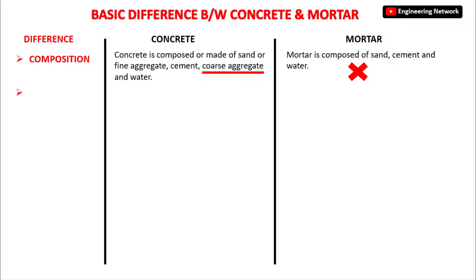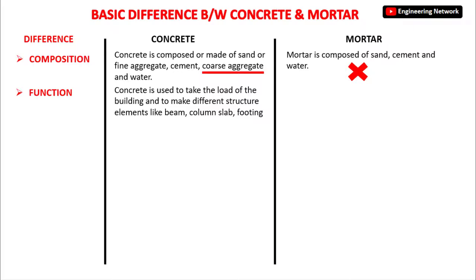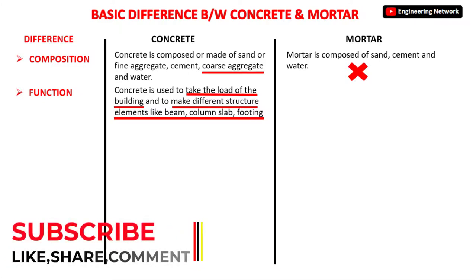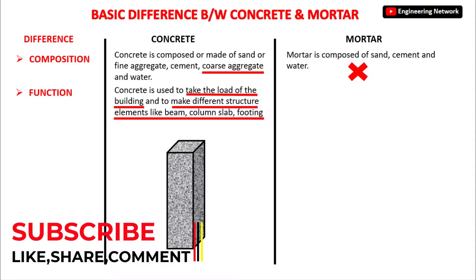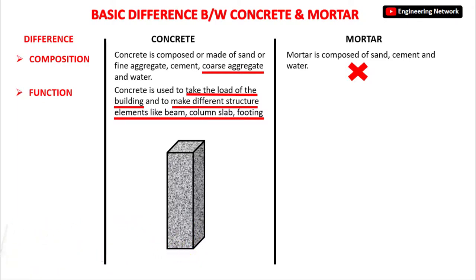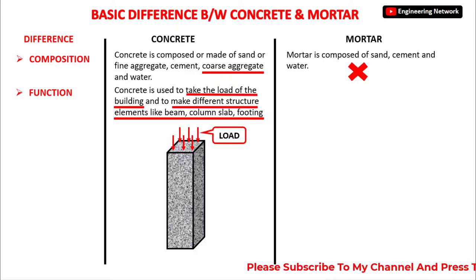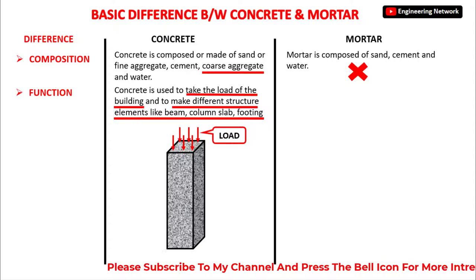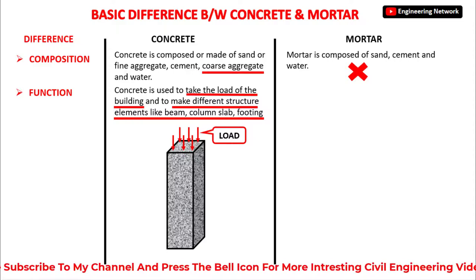The next difference is the function of concrete and mortar in building construction. Concrete is used to take the load of the building, and is used to make structural elements like beam, column, slab, and footing. For example, a column made of concrete transfers the entire load to the next structural element and must be strong enough to do so safely.